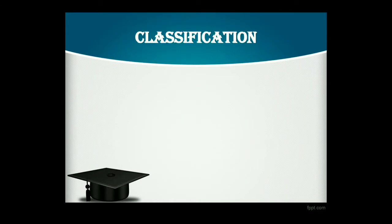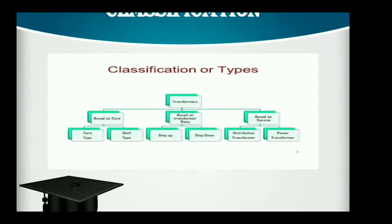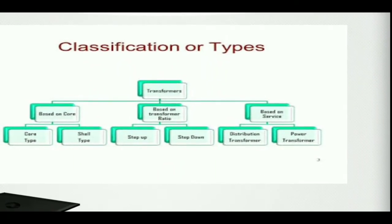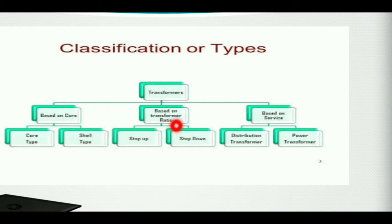The first slide is the type of transformer or the classification of transformer. Transformer can be classified into three categories. One is based on core — what type of core is used or how the windings are wound in the core. Based on core: one is core type transformer, another is shell type transformer. And based on transformation ratio, that is step-up transformer and step-down transformer. And based on service: one is distribution transformer and one is power transformer.